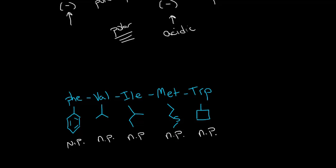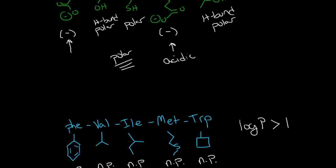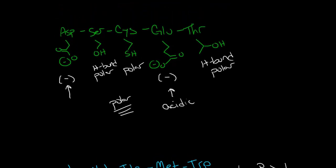If we think about this in the context of our log P values, this would dissolve really well in octane, so that makes log P greater than one. When we compare this to the previous peptide, this one would dissolve really well in water, so our log P would be less than one. This one would also be the most acidic of the peptides we looked at because we have these two acidic amino acids.